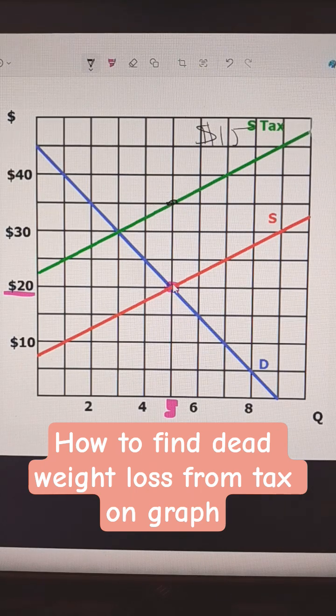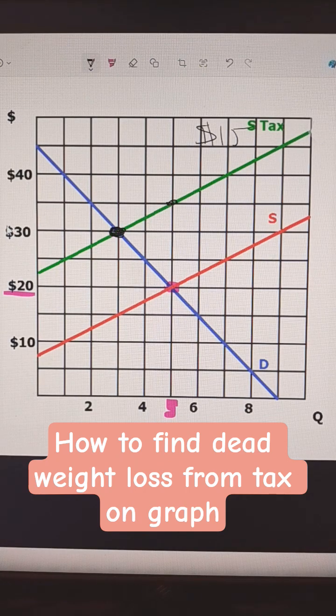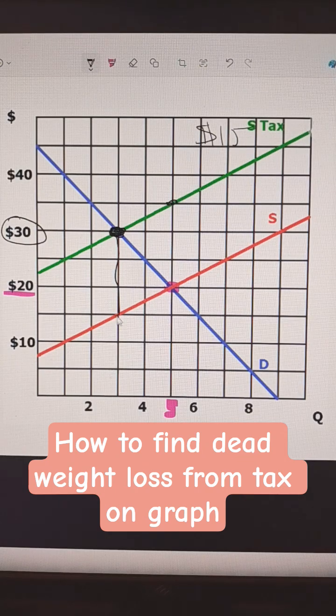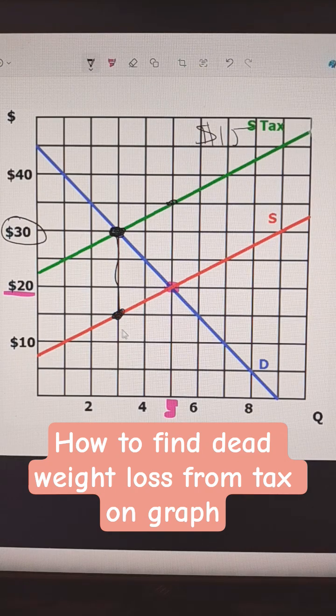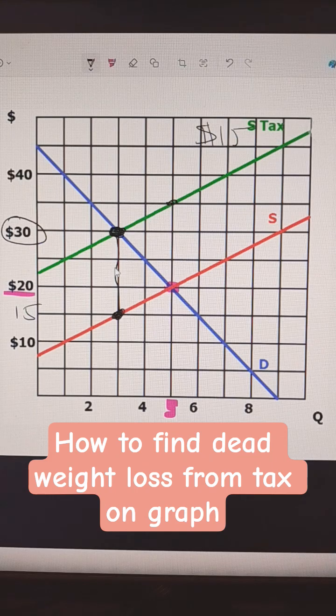So we're placing that $15 tax on this market. We're now going to go to where S plus tax equals demand. So the price now would be $30, and then we're going to follow that down to where it hits the supply curve. So the buyer is going to pay $30, the $15 goes to the government, and $15 goes to the seller.